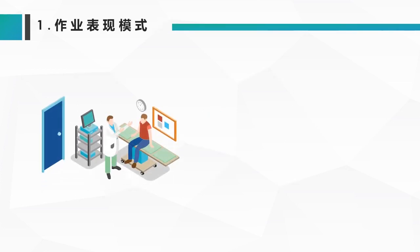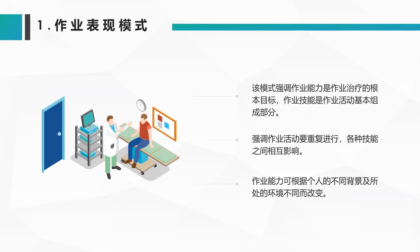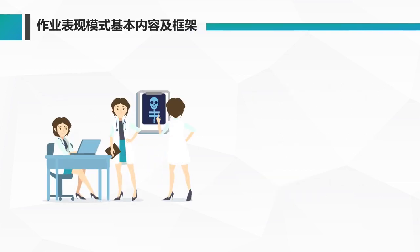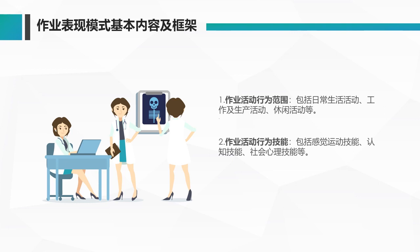第一种，作业表现模式：主要强调作业能力是作业治疗的根本目标，作业技能是作业活动的基本组成部分，强调作业活动要重复进行，各种技能之间相互影响，作业能力也可根据个人的不同背景和所处环境进行改变，因人而异。作业表现模式的活动范围包括日常生活活动、工作和生产活动、休闲活动；行为技能包括运动技能、认知技能、社会心理技能；行为情景包括时间范畴和环境范畴等。